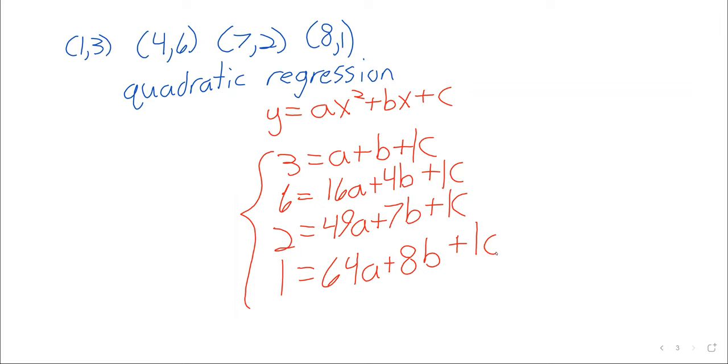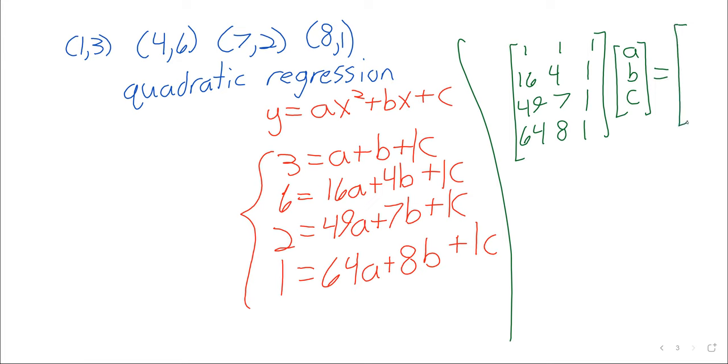And this is then a matrix equation. Every system of linear equations is a matrix equation. The matrix is [[1, 1, 1], [16, 4, 1], [49, 7, 1], [64, 8, 1]] times the unknown vector [A, B, C] equals [3, 6, 2, 1].